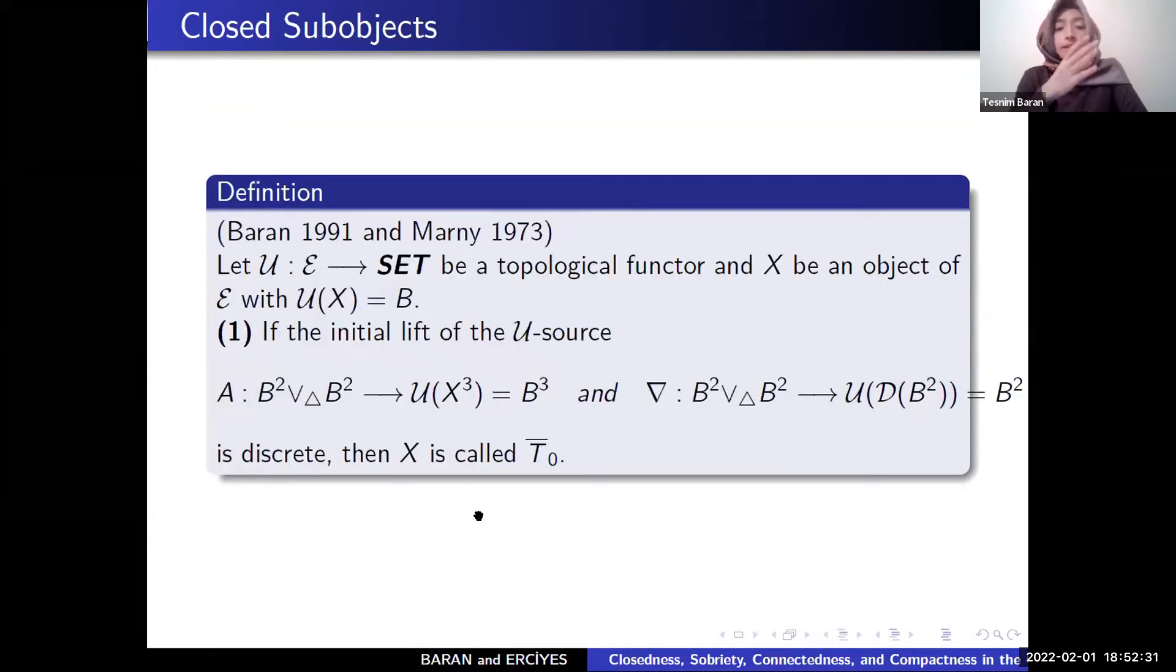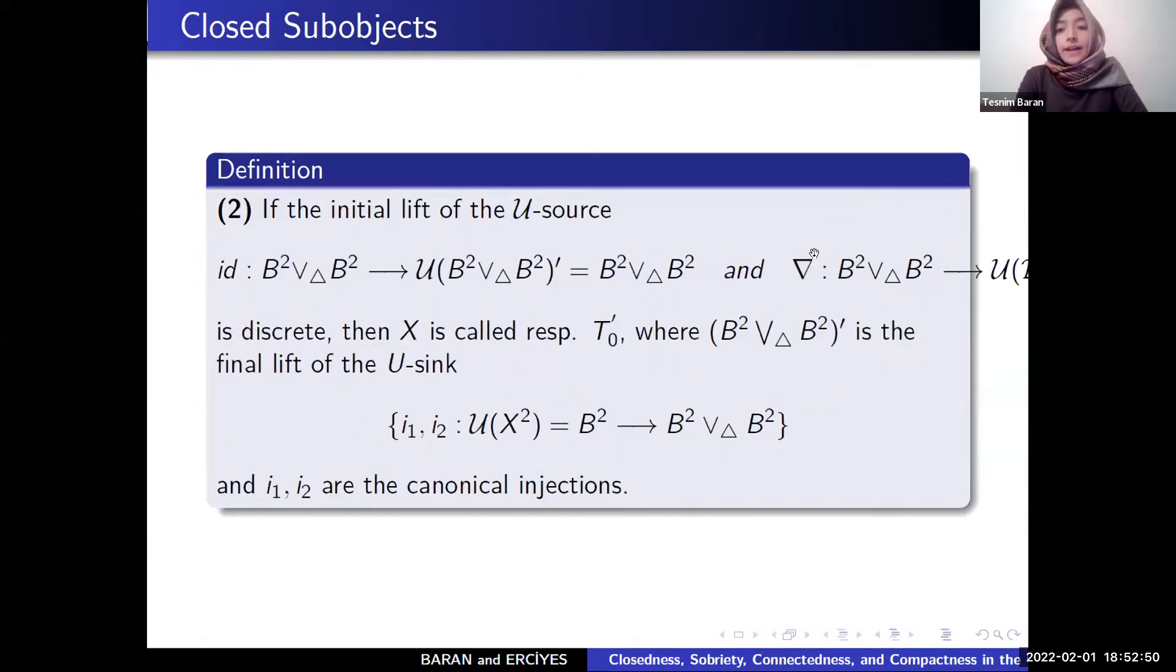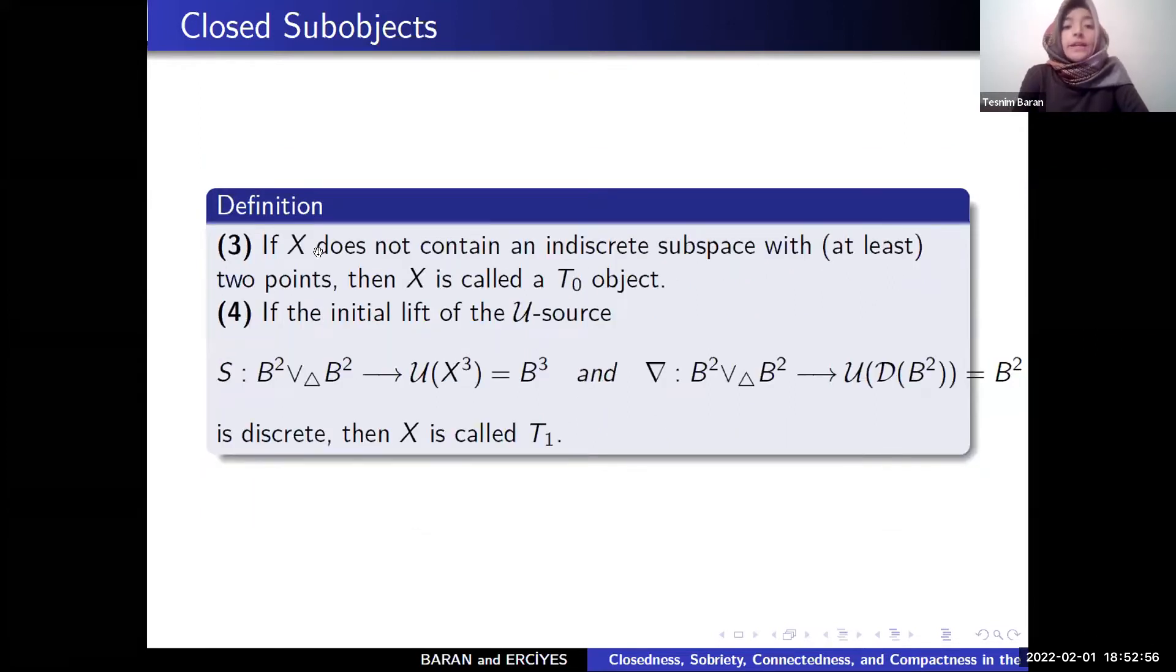And he used this map definition to T0, T0 bar, T0 prime. If the initial lift of the U source A and delta is discrete, then X is called T0 bar. If the initial lift of identity and delta is discrete, X is discrete, then X is called T0 bar.